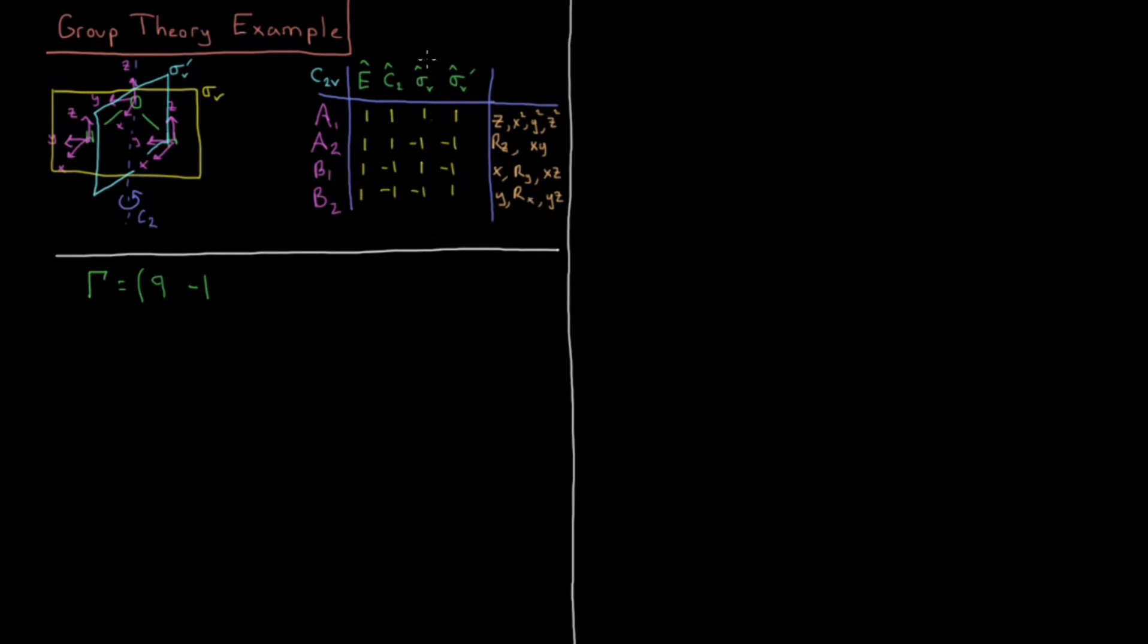With Sigma V, what we have is all three Zs stay in the plane. All three Ys stay in the plane. All three Xs switch direction. So this is plus 1, 2, 3, 4, 5, 6, minus 1, minus 2, minus 3. 6 minus 3 gives us a character of 3. And Sigma V prime, we have these three are going to move off axis. These three are going to move off axis. They'll be off diagonal. This Z is going to stay the same. This X is going to stay the same. This Y is going to switch. 1 plus 1 minus 1 gives us 1.